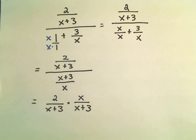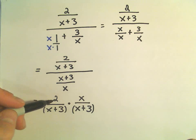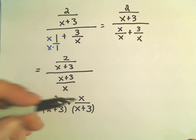And in this case, if there was anything to factor and cancel, I would certainly try to factor and cancel. But in this case, in the numerator, we have a 2 times an x. In the denominator, we have x plus 3 and x plus 3.